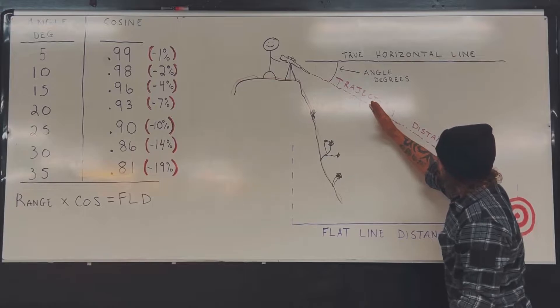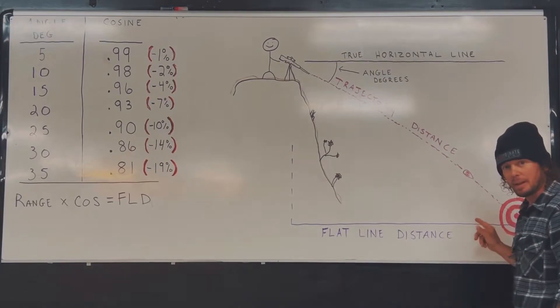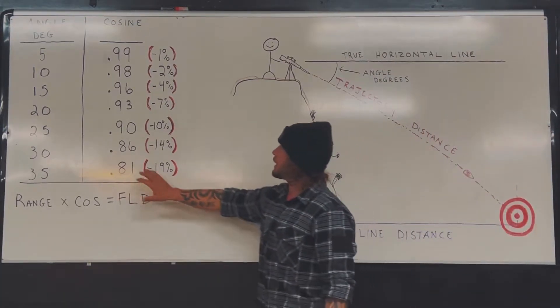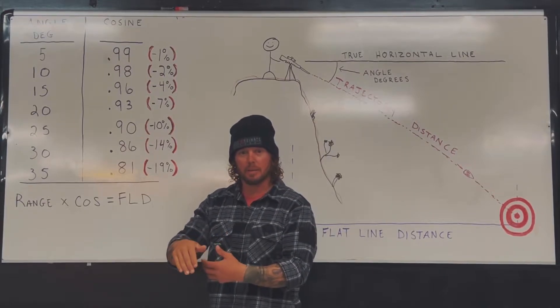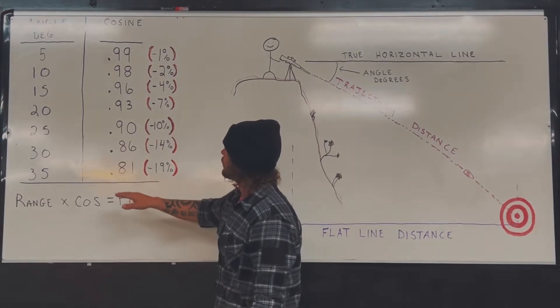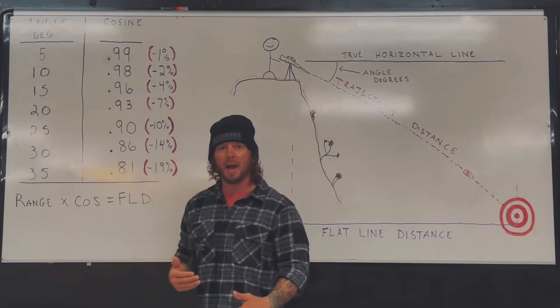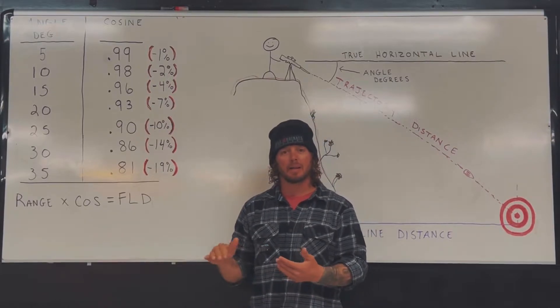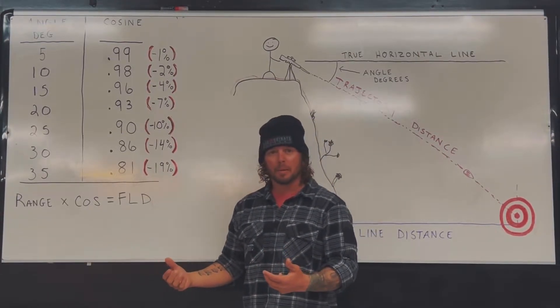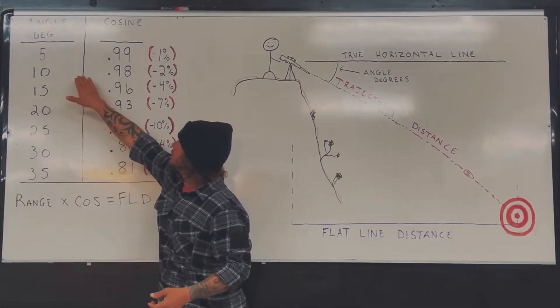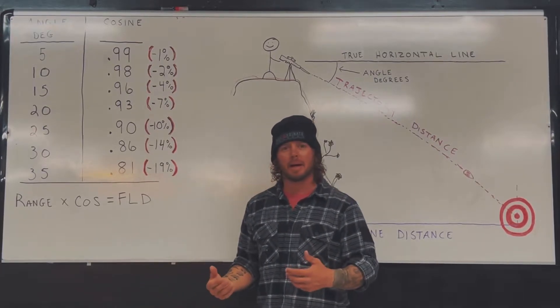Because if we were to bring our trajectory down, it would be much further than our flat line distance. So we are taking a percentage of our actual trajectory flight for our flat line distance. So if we have a 5 degree angle, it's 0.99 or 99 percent of your distance would be your flat line distance, and that's what you would dial for. That's not a big number. Same thing we look at 10 degrees: 0.98, so 98 percent. Again, it's not a huge number.